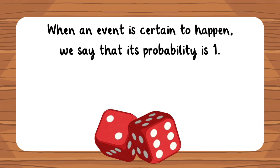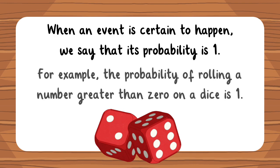When an event is certain to happen, we say that its probability is one. For example, the probability of rolling a number greater than zero on a dice is one.